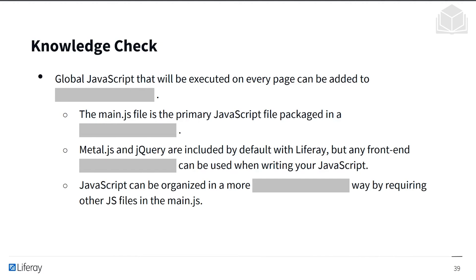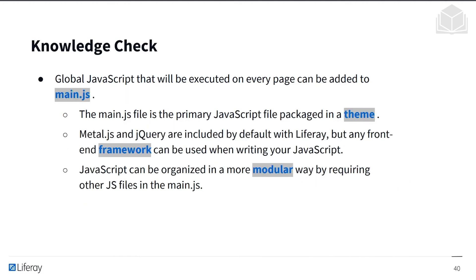For the knowledge check: global JavaScript that would be executed on every page can be added to main.js, which is the primary JavaScript file packaged in a theme. Metal.js and jQuery are included by default with Liferay, but any front-end framework can be used when writing your JavaScript. JavaScript can also be organized in a more modular way by requiring other JS files in main.js.